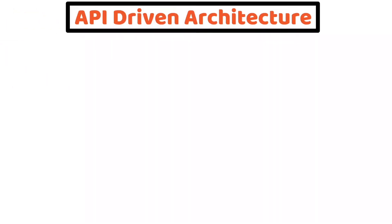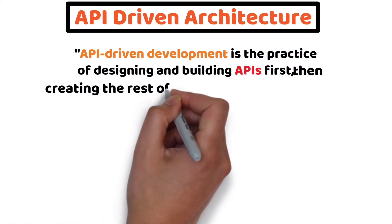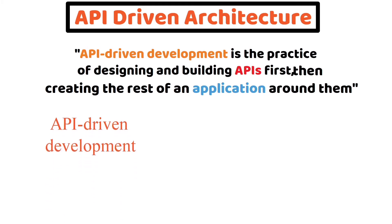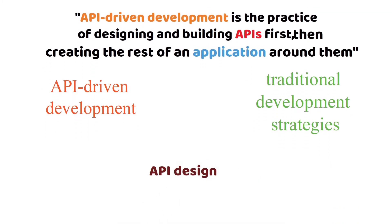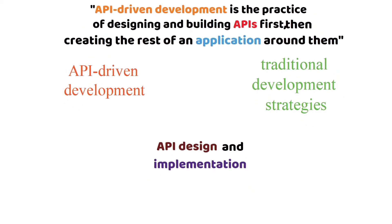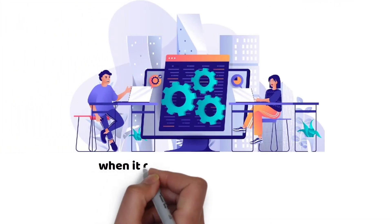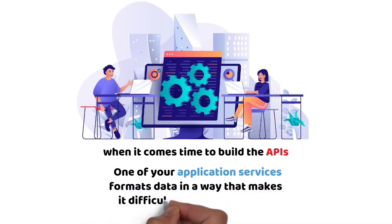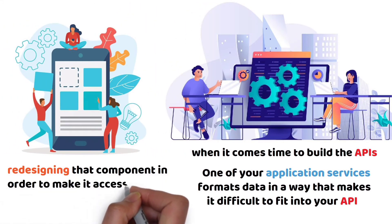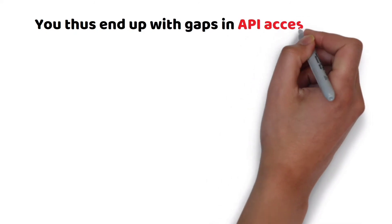API-driven development is the practice of designing and building APIs first, then creating the rest of an application around them. In this way, API-driven development is different from traditional development strategies, which usually include API design and implementation as one point on the development timeline, but not as the first step in application production. For example, when it comes time to build the APIs, you might realize that one of your application services formats data in a way that makes it difficult to fit into your API. As a result, you may decide that redesigning that component to make it accessible via an API is not worth the effort, leading to gaps in API accessibility.